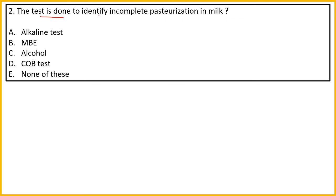The next question: which test is done to identify incomplete pasteurization of milk? Option A: Alkaline test. Option B: MBE. Option C: Alcohol test. Option D: COB test. Option E: None of the above. It is a simple question if it has been studied; if not, it will be difficult.